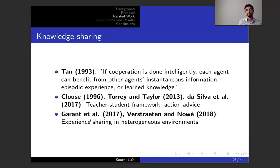I briefly cover related work. The first work we got inspiration from was from Tan in 1993. I would quote him saying that if cooperation is done intelligently, each agent can benefit from other agents' instantaneous information, episodic experience, or learned knowledge. Tan proposed several different approaches of sharing experiences, and these were later explored in the knowledge sharing literature. We have other papers from Klaus, Torin Taylor, and Da Silva exploring the teacher-student framework, but using action advice instead of sharing experiences. We also have some other newest papers exploring experience sharing in heterogeneous environments as well.